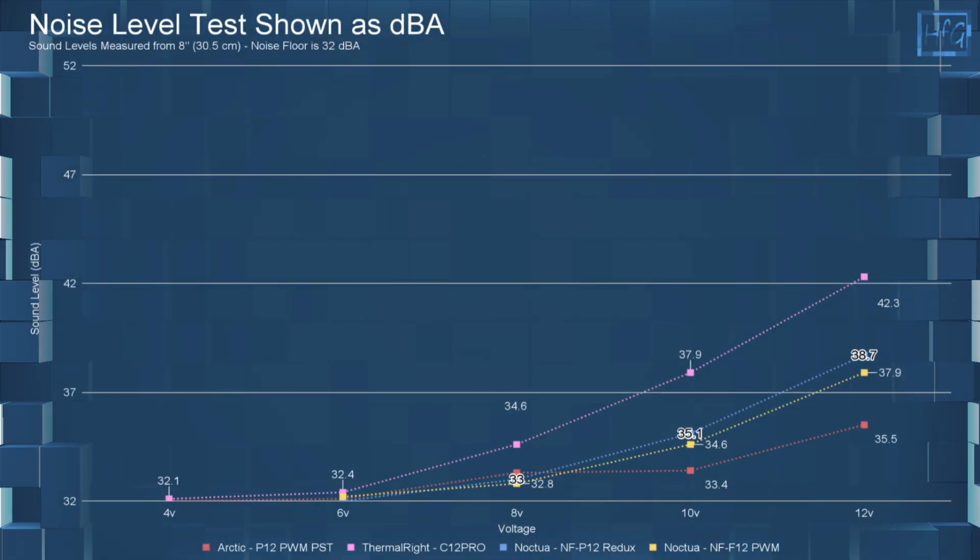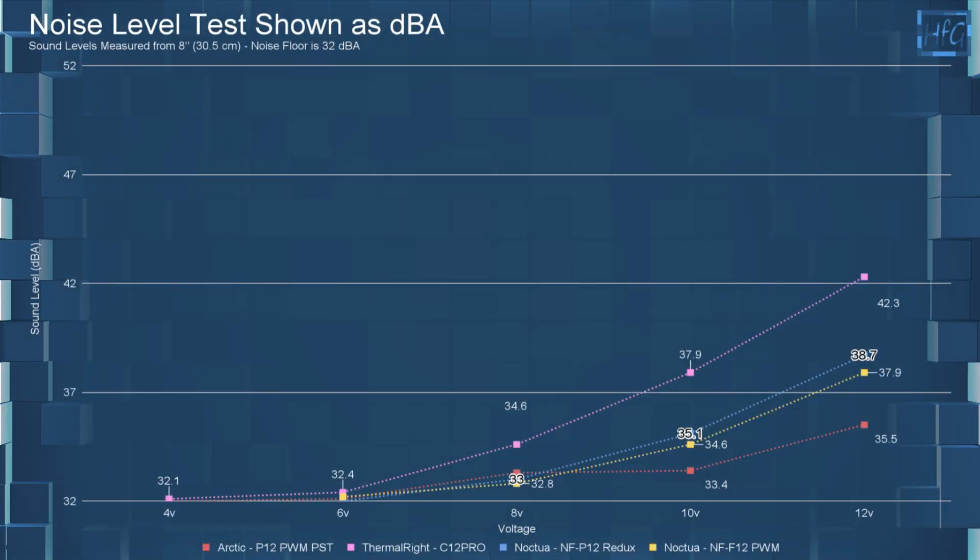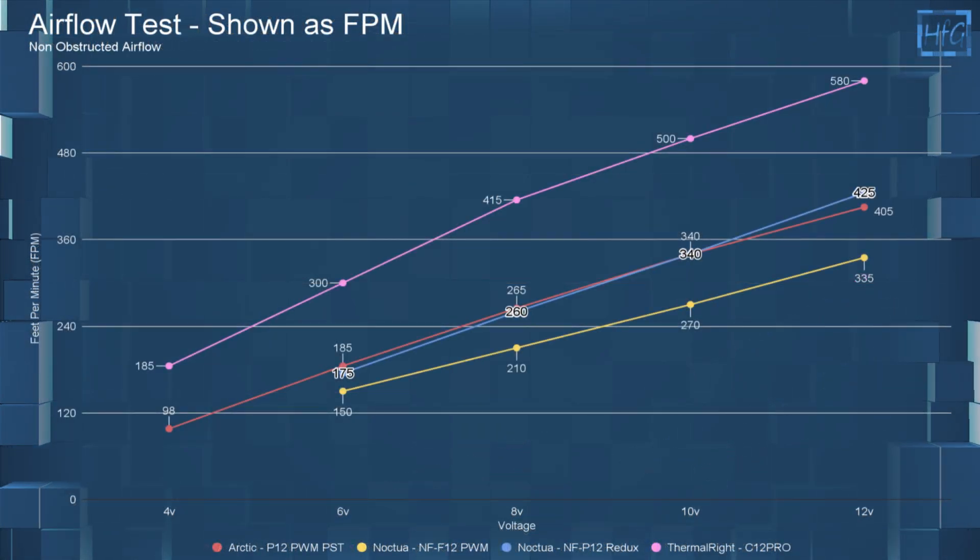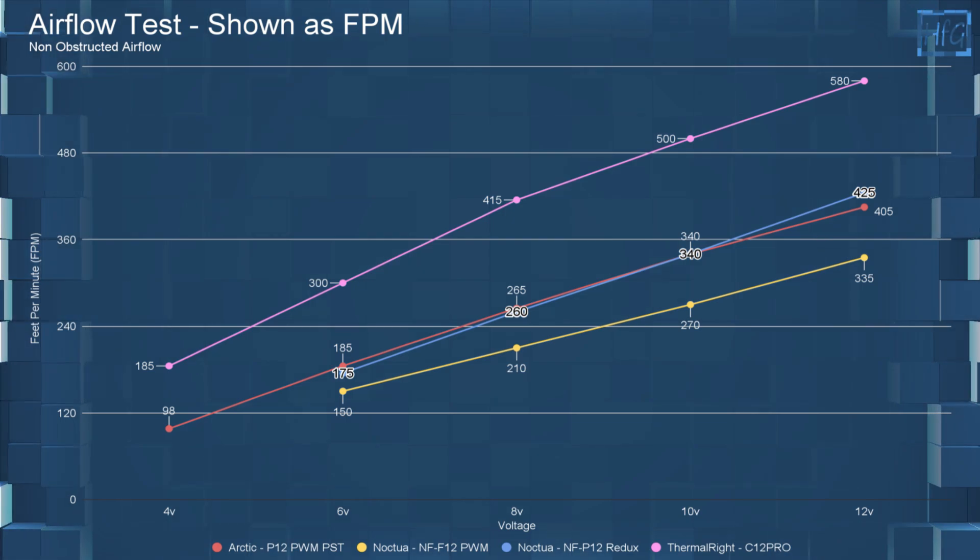When comparing the NF-P12 to these other fans, it lands in the middle of the DBA chart, pretty much overlapping with the NF-F12. For airflow, with no obstructions, the NF-P12 is moving the same amount of air as the Arctic P12 PWM PST when voltage equalized.